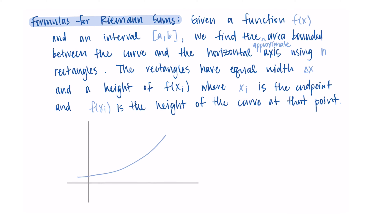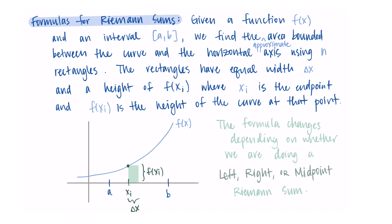To illustrate, consider a function f on an interval from a to b. We choose some x_i values in the middle to use as endpoints, find the function value at those points for the height of the rectangle, and Δx is the width. The formula we use changes depending on whether we are doing a left, right, or midpoint Riemann sum, but this is the general idea and the terminology and notation we'll use.